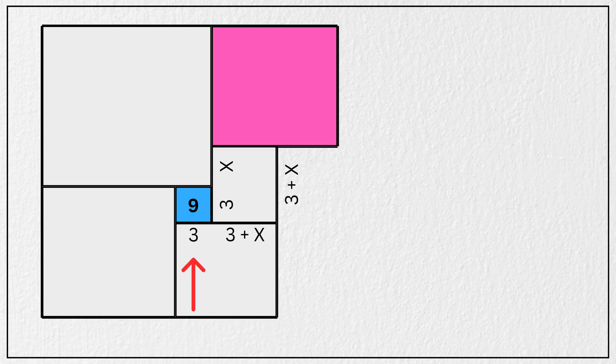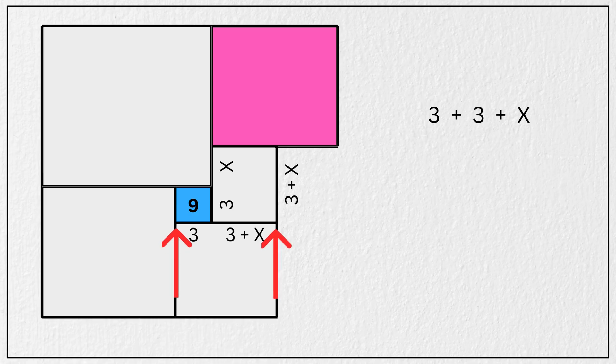Again, if this length is 3 units and this length is 3 plus x units, that means the total length of this square will be 3 plus 3 plus x units, which is 6 plus x units. So this is 6 plus x units and this is also 6 plus x units.